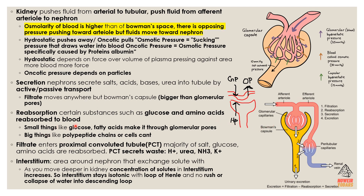Next we have reabsorption, where certain substances such as glucose and amino acids are reabsorbed into the blood. Reabsorption occurs under the condition that the substances must be small enough — like glucose and fatty acids — to make it through the glomerular pores.